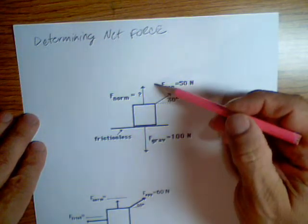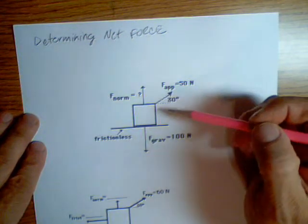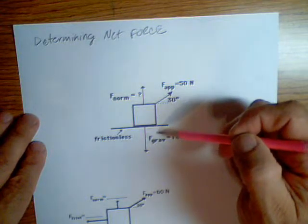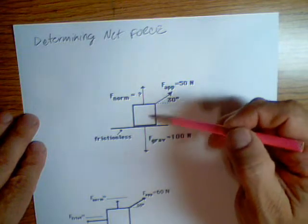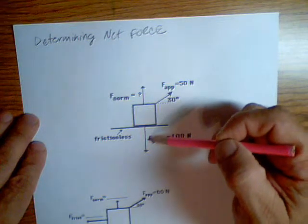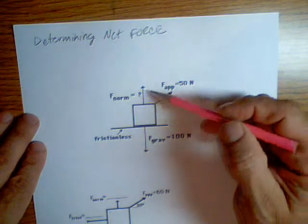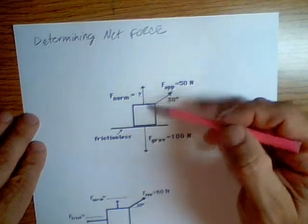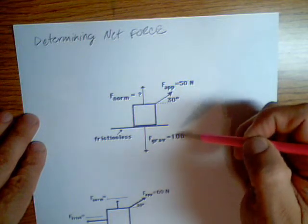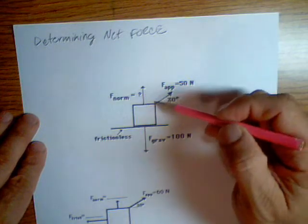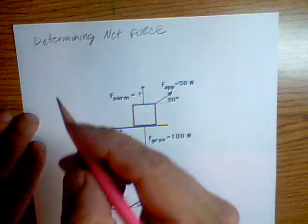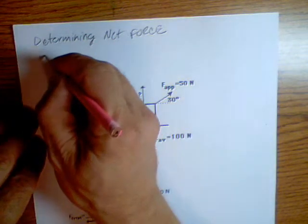It's not moving up or down — it's sitting still. And because it's sitting still, we know that all the forces in the y direction equal zero. So if all the forces in the y direction equal zero, all we have to do is find out what all those forces are, set it to zero, and solve.